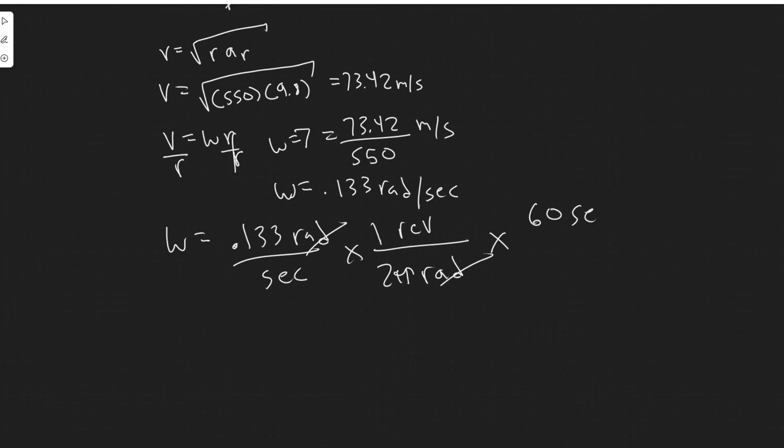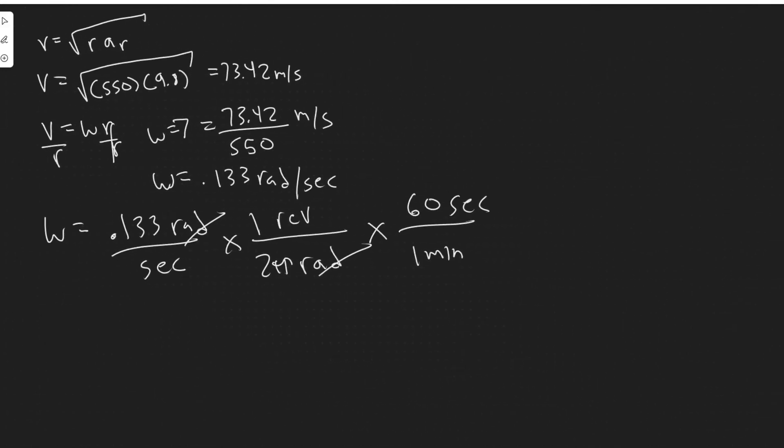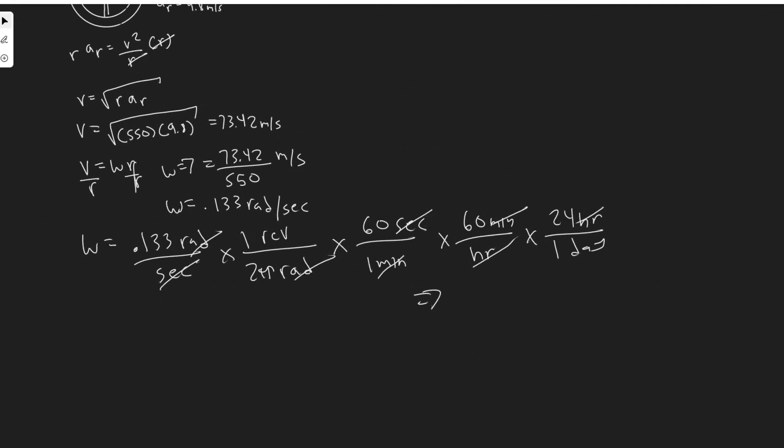So converting it to days, we know 60 seconds is equal to one minute. And then 60 minutes is an hour. And then 24 hours in a day. So you'll see seconds cancel with seconds, minutes with minutes, hours with hours. And then all you got to do is multiply through. So let me plug this in, 0.133 divided by 2 pi. And then you would multiply by 60, multiply by 60 again and multiply by 24.